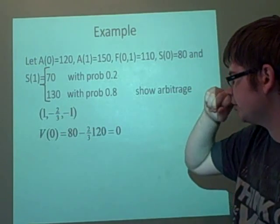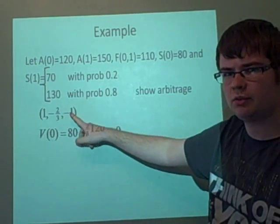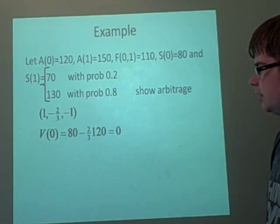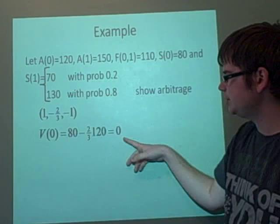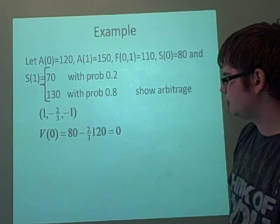So if we borrow some money from here, minus two-thirds of a bond, because we borrowed some money, we've got a negative one. And that will equal zero, as you see.